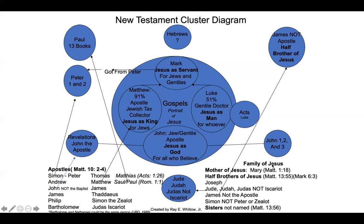Now let's go over to the family of Jesus, because there are a lot of names that are similar to the apostles. We know that the mother of Jesus is Mary, as stated in Matthew 1:18, and Mary was married to Joseph. After Jesus was born, Mary and Joseph had other children, meaning Jesus had half brothers and half sisters. In Matthew 13:55 and Mark 6:3, we have Joseph — the half brother of Jesus, likely named after his father — and then we have Jude, sometimes called Judah or Judas. He did write a book of the Bible: the book of Jude.